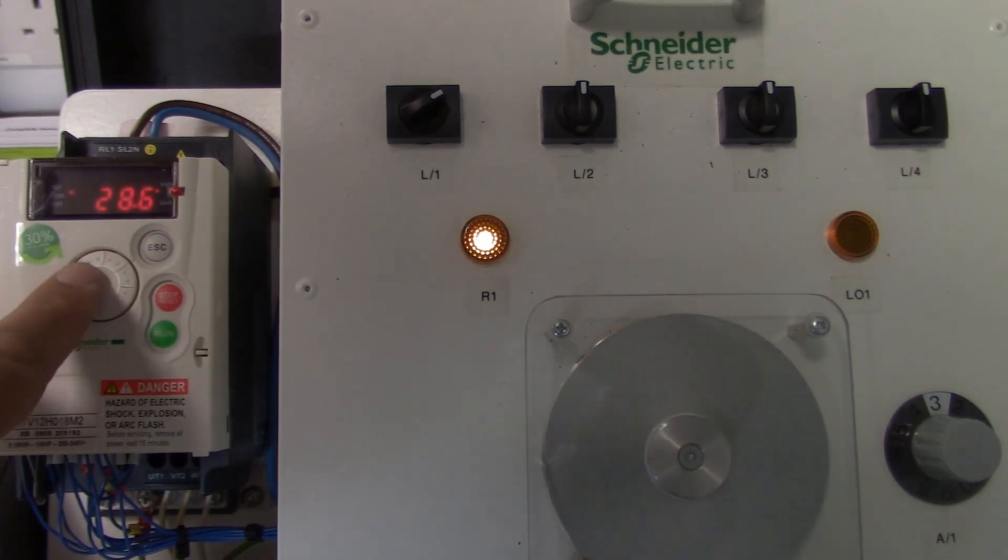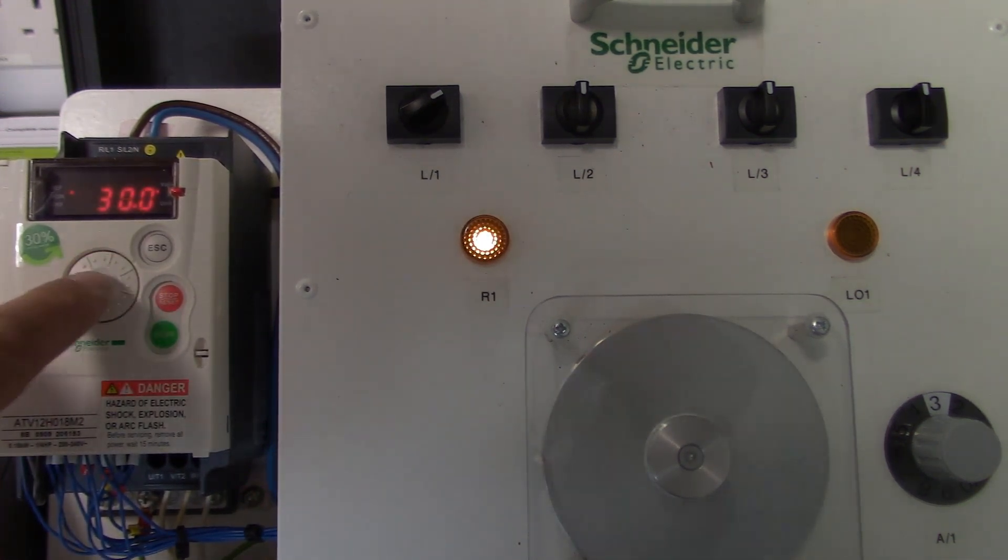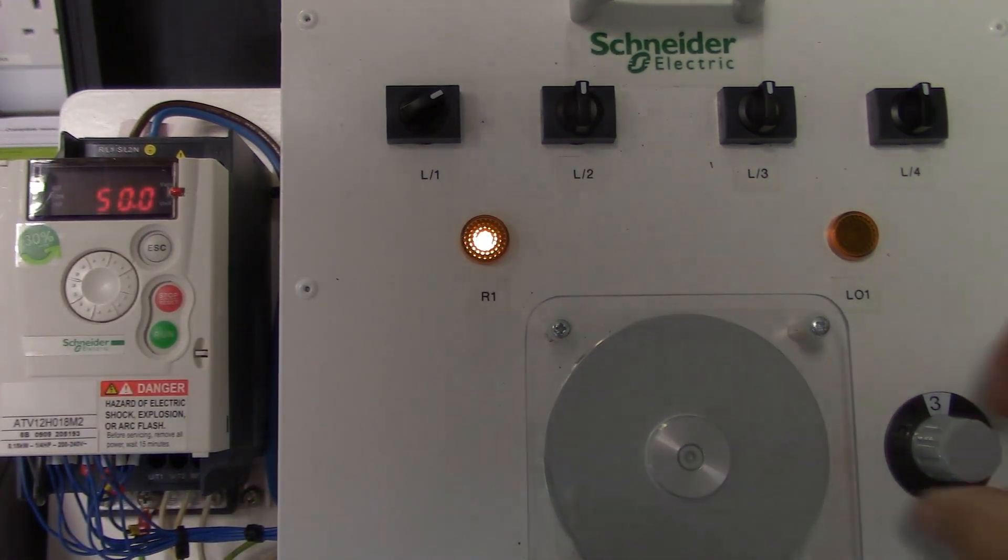As you can see as the PID set point is raised the motor speeds up to try and balance the pressure to the set point. Then as we raise the feedback the motor will reduce in speed to keep the level pressure.